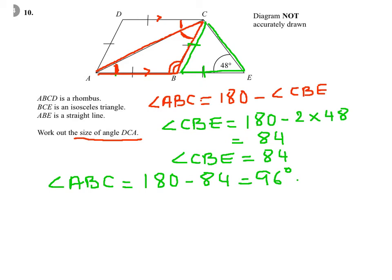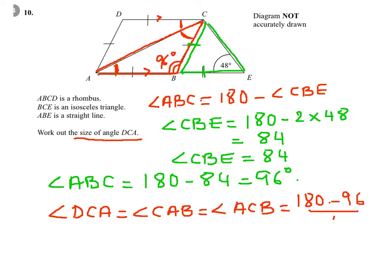So, this angle here is 96, and angle DCA will equal angle CAB, which is in turn equal to ACB, which is equal to 180 take away 96, divided by 2, because the red triangle is an isosceles.